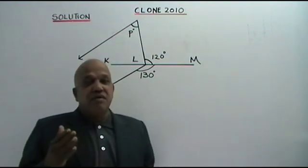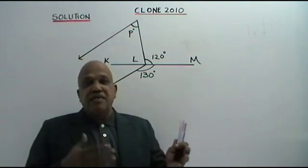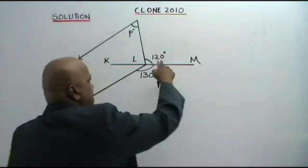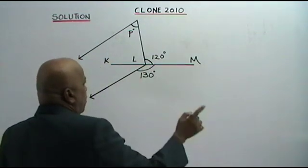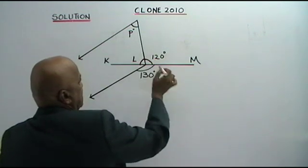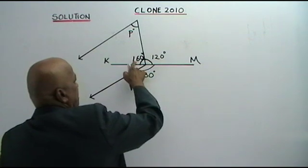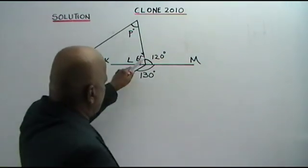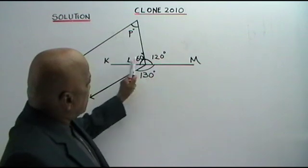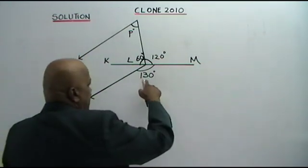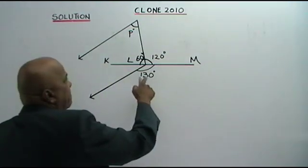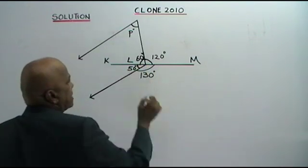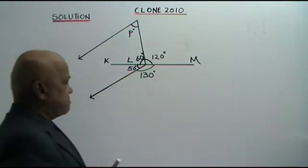Now, if KLM is a straight line and this angle is 120 degrees, therefore this angle is 60 degrees — 180 minus 120 is 60. This angle is 130, and since it is a straight line of 180 degrees, therefore if this is 130, this adjacent angle is 50 degrees — 180 minus 130 gives 50.